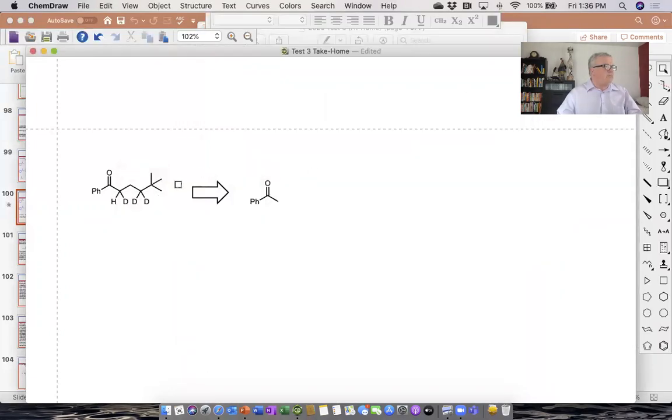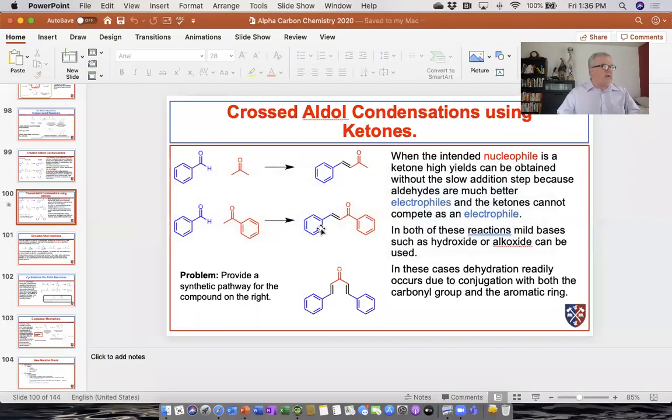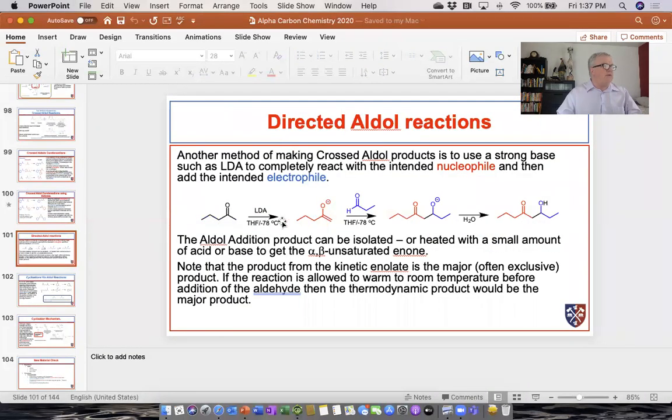So what we've been asked to synthesize is this. We were told we could start from acetophenone. So let's take a look at our notes, and here we see the crossed aldol condensation using our ketones. These are going to be our nucleophiles, and these are going to be our electrophiles. We'll probably end up doing this as a directed aldol reaction. Acetophenone is our ketone, and we're going to react it with LDA to form the enolate anion, and then we're going to add the appropriate aldehyde so that we can make the connectivity.